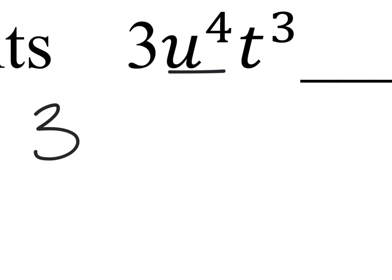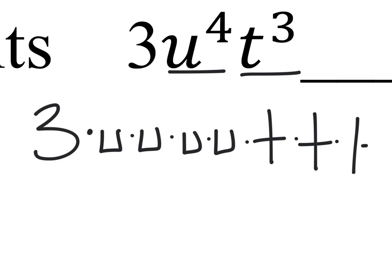So we have the 3, and then this would indicate that we have 4 u's being multiplied together. So I have 4 u's being multiplied together, and then 3 t's being multiplied together like this.